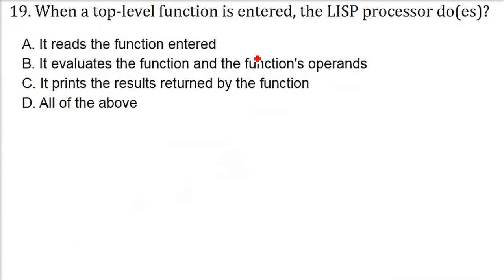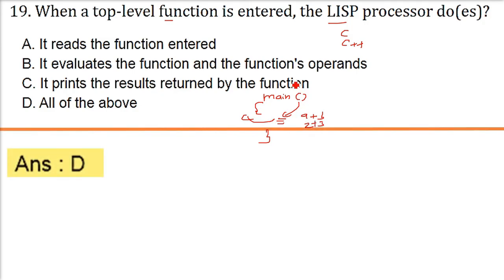When a top-level function is entered, the LISP processor does. So whenever we talk about a function, or even a top-level function, C, C++, Java. Top-level function, for example, in C, you have main. Then what do we do? What this function does? It will input the value. It will take the inputs. Take the operands. Do the function. What for it is made. And the result is returned. For example, if it is being given 2 and 3, 5 will be the result. The answer is all of the above.